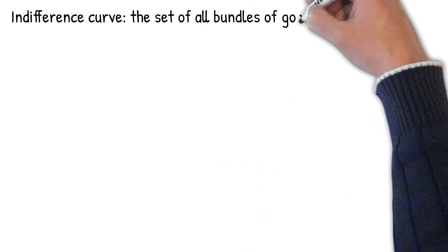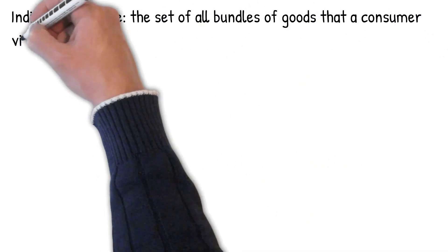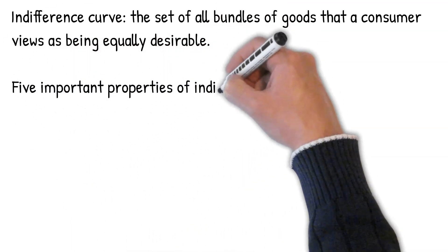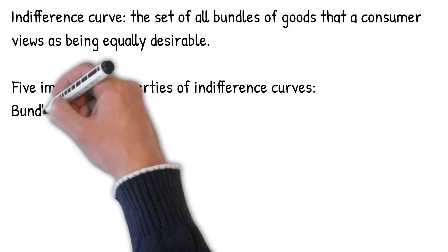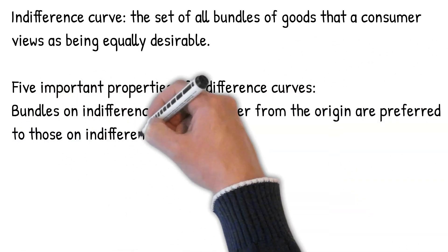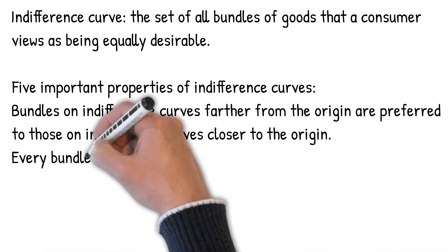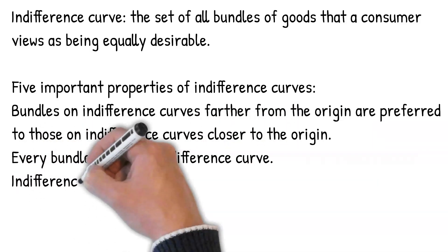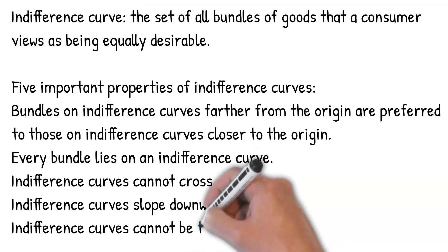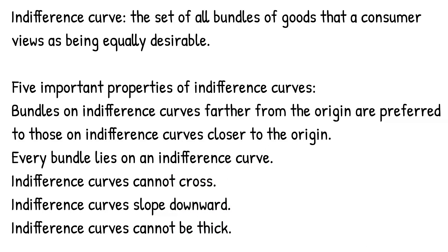An indifference curve is a set of all bundles of goods that the consumer views as being equally desirable. There are five important properties of the indifference curve. First, bundles on indifference curves further from the origin are preferred to those on indifference curves closer to the origin.